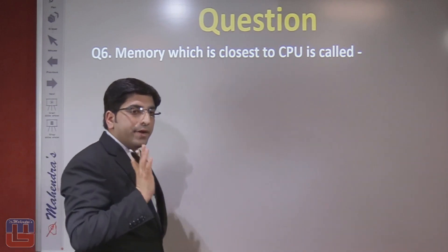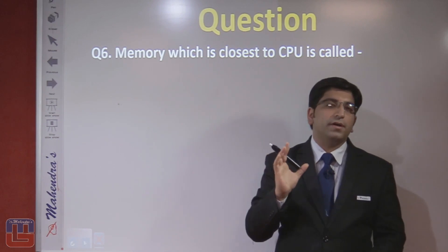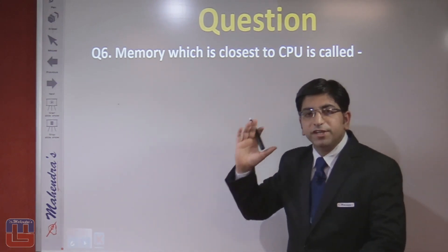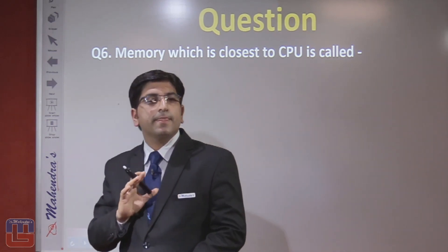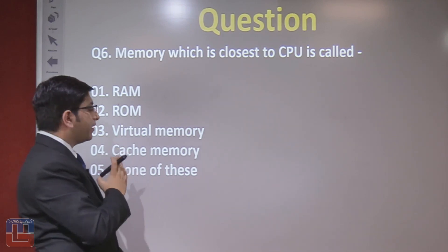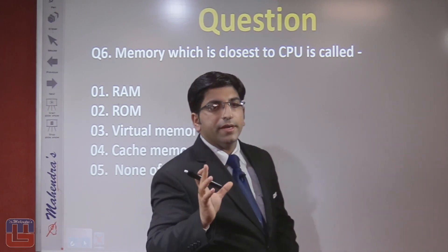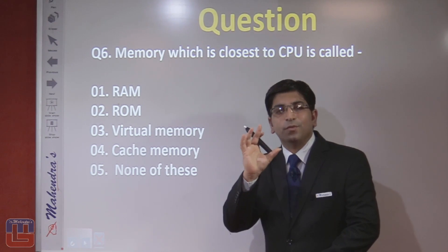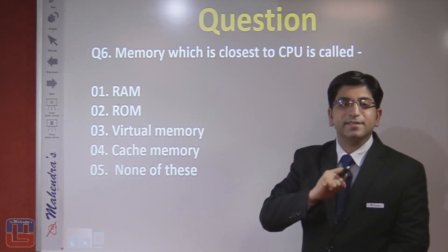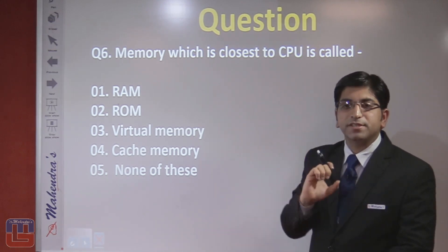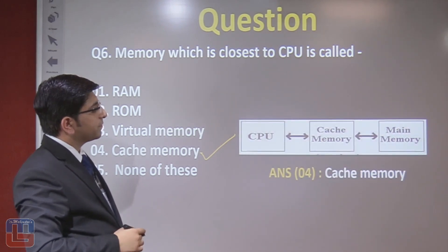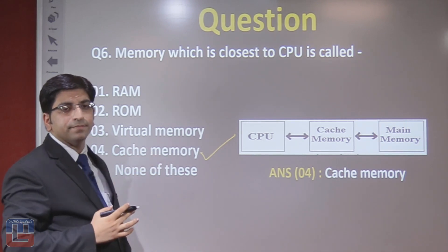Next question: memory which is closest to the CPU is called what? Among the many types of memory — RAM, ROM, and so on — which is closest to the CPU? This is also the fastest memory. Cache memory is the memory closest to the CPU. The right answer is option number 4: cache memory, which lies between the CPU and the main memory.